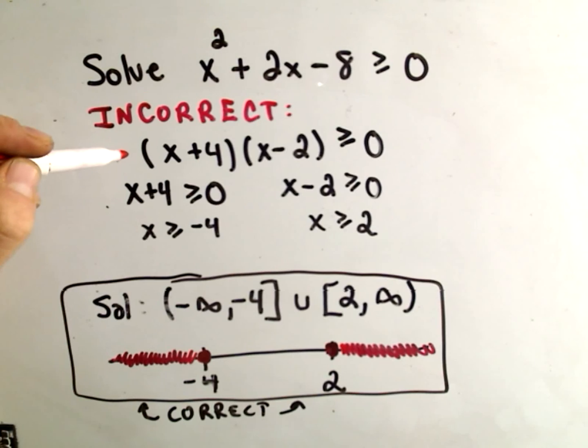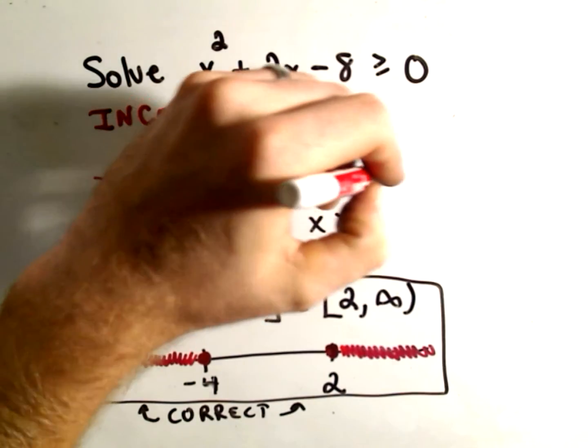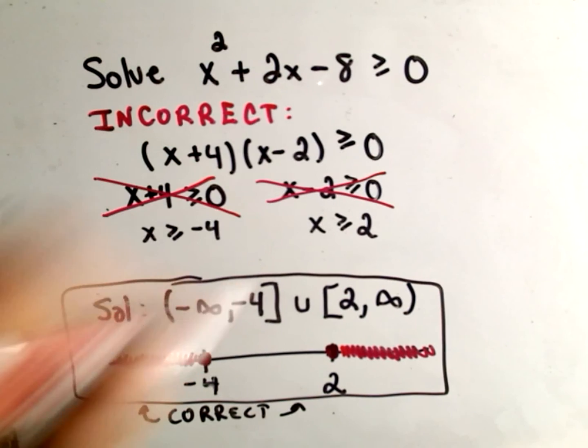So, this part's okay, writing it, but doing the step where you take each piece and make it greater than or equal to, or less than or equal to, or whatever it is, that is very much incorrect. Again, you have to make this number line and check all the points. So, I just want to point this out so that hopefully you won't do it. Alright, good luck.